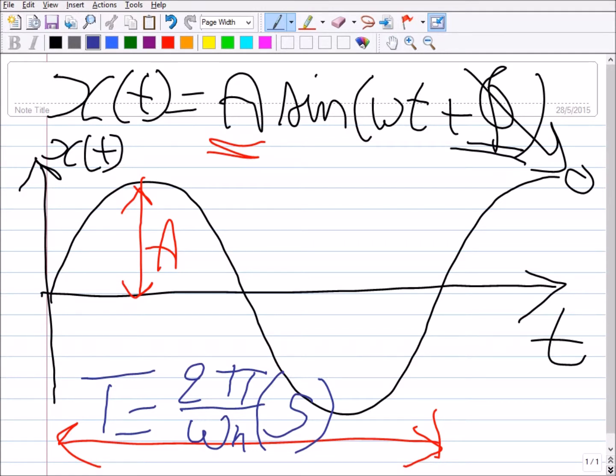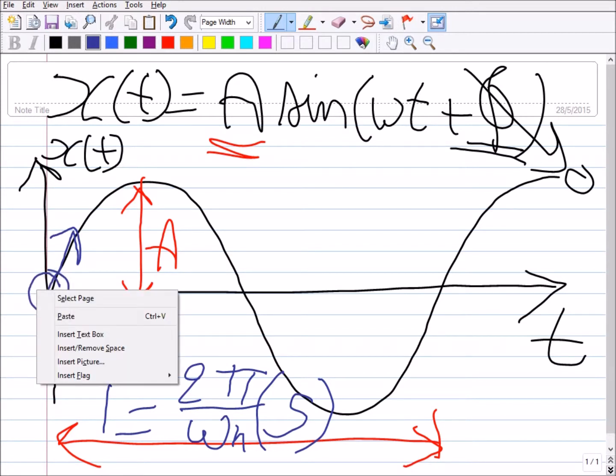Now as you can see here the system started from time zero with an initial velocity, but it had zero displacement. So at time t equals zero the displacement was zero but the velocity exists. Let's see what happens if the system started with different starting conditions.